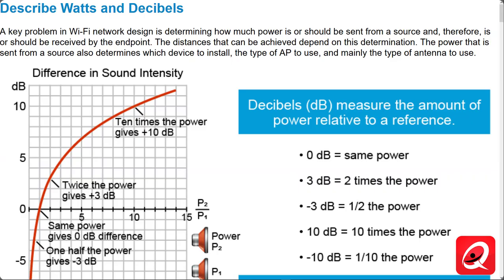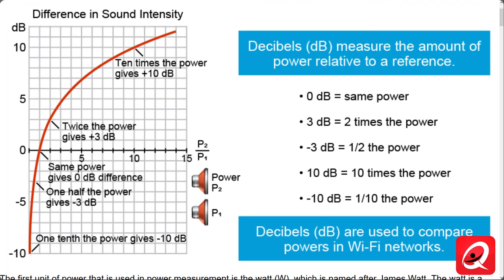In our next section, we'll talk about the relationship between power, amplitude, watts, and decibels. One of the key factors in deciding what type of access point and antenna to use — placement, direction, passive or active amplification — depends on getting the signal from point A to point B. The power or amplitude sent from the source determines what devices to install, the type of access point, and the type of antenna. Let's first define what a decibel is and how it relates to a wireless environment.